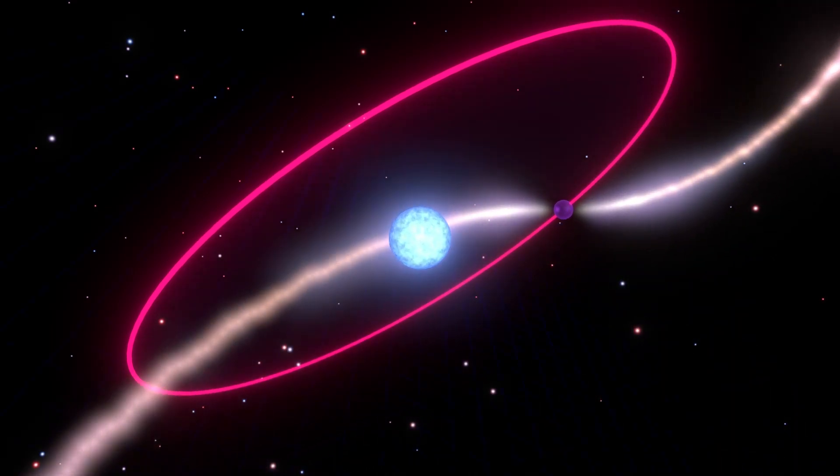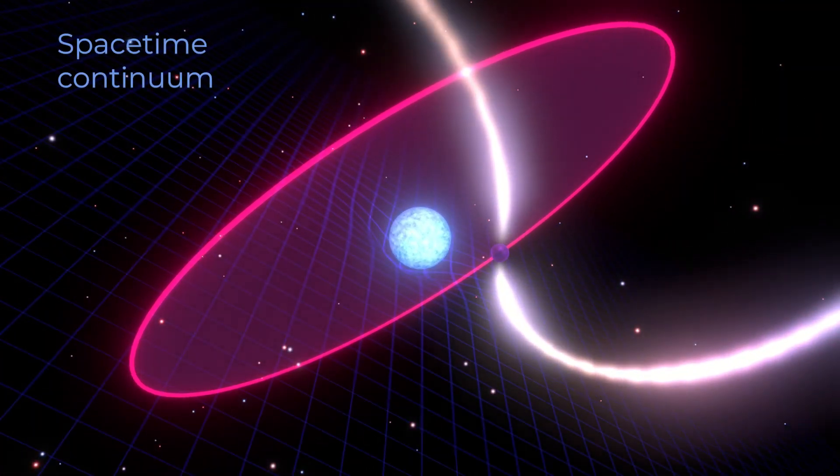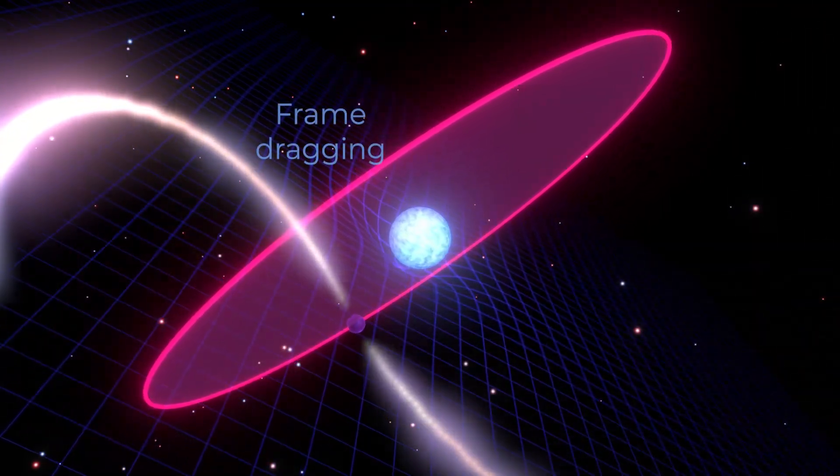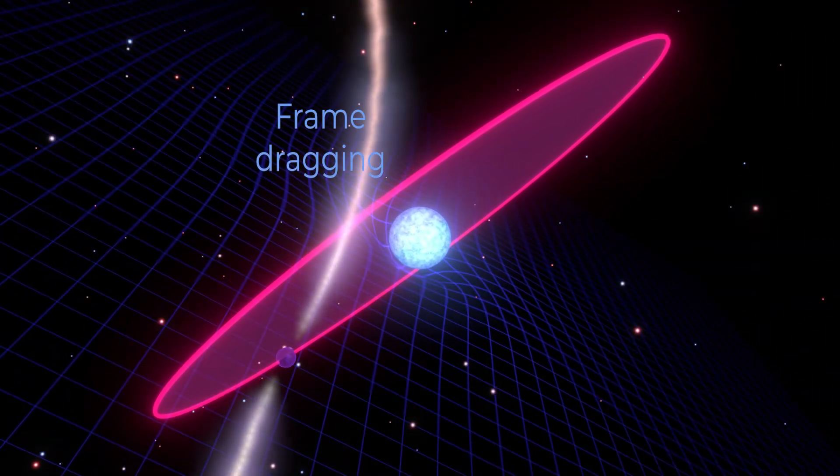In our system the rapidly spinning white dwarf drags space-time a hundred million times more strongly than the earth would causing the entire orbit to tumble in space.